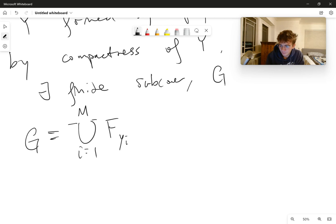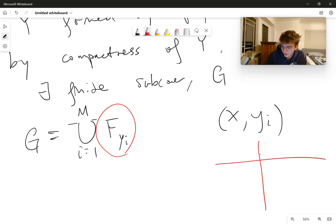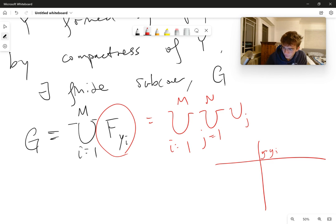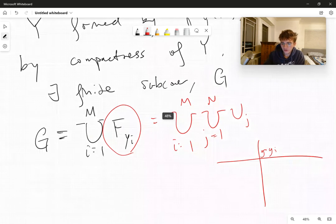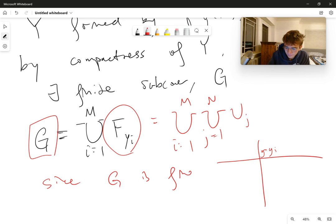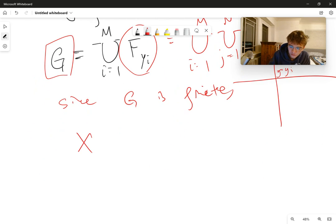...of the horizontal line at Y is equal to Y I. And so if I expand this out, I'm going to get the union from I equals one to M union from J equals one to N of U sub J. And now we can just see that essentially G is also a finite union of open sets, and it covers X cross Y by our construction. And therefore, we've constructed a finite sub cover. And so since G is finite, X cross Y is compact.